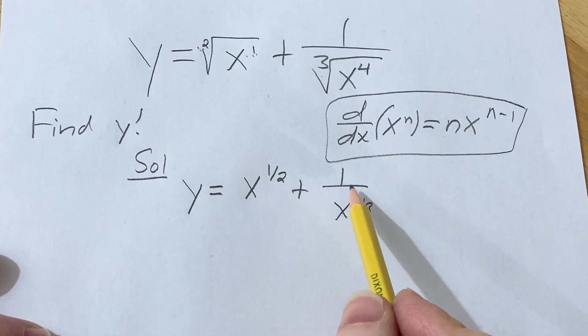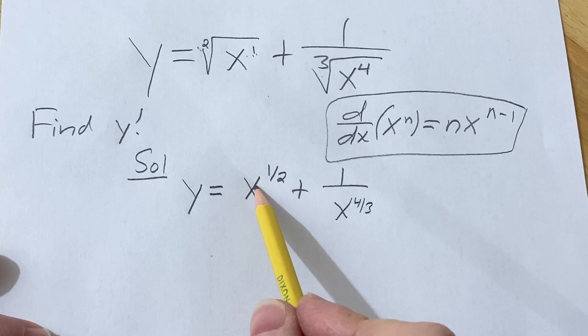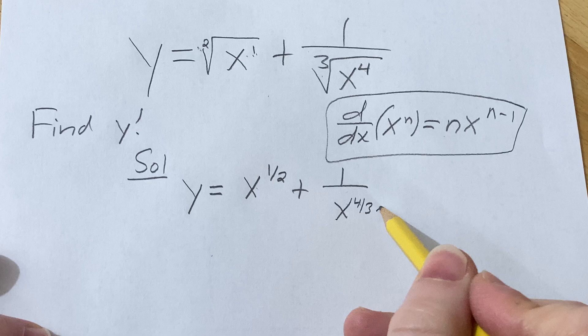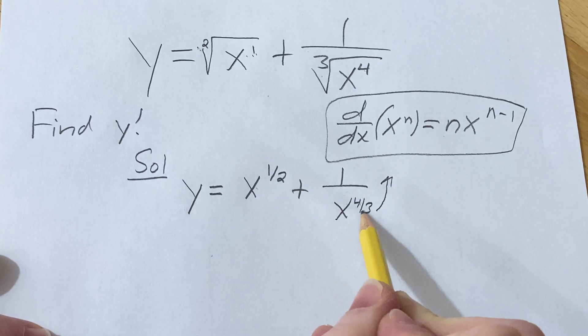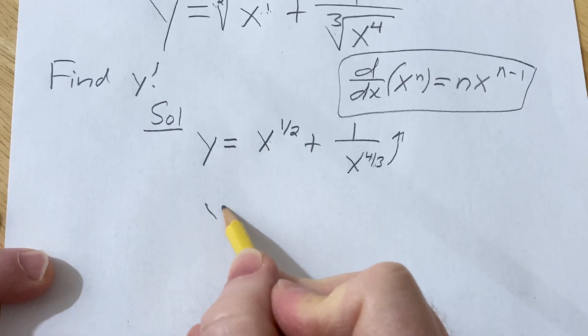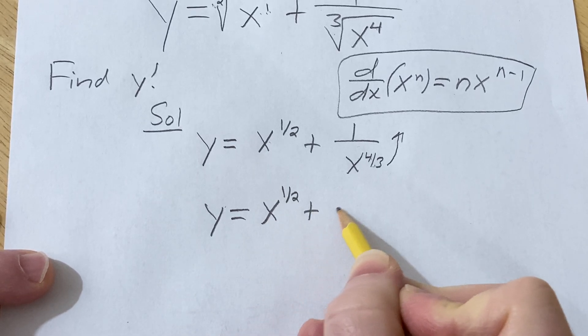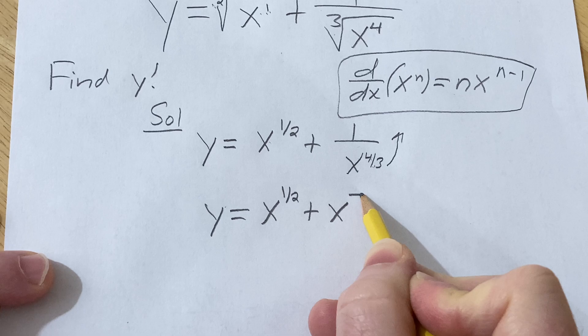We're not quite there yet though, because we have a fraction here. We can differentiate this one, but we can't do this one yet. So what we're going to do now is we're going to bring this upstairs and when we do that, the exponent is going to become negative. So y is equal to x to the one half plus x to the negative four thirds.